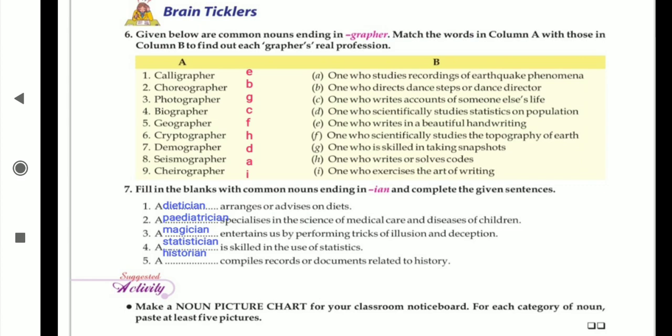What is the cryptographer? H - one who writes or solves codes, different codes. Then demographer, what is the work of demographer? D - one who scientifically studies statistics on population only. He studies the numbers of population, that's why he's called the demographer.